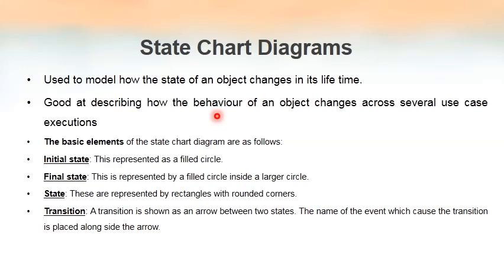Transitions represent how the object changes from one state to another. A state chart diagram contains many states and the object changes from one state to another — that is known as a transition. To represent transitions, we use arrow lines between two states, and we write the event name along that line — that is, the event upon which this transition takes place is labeled along the line. We will now see an example.